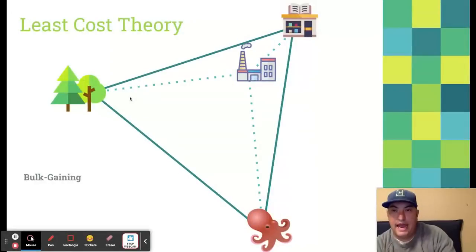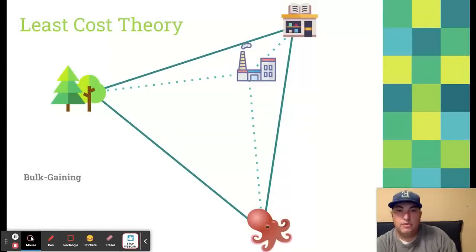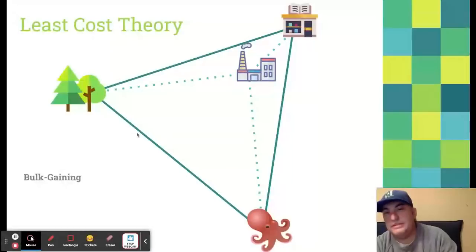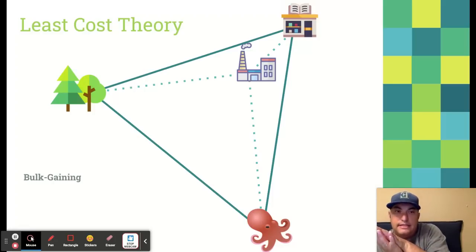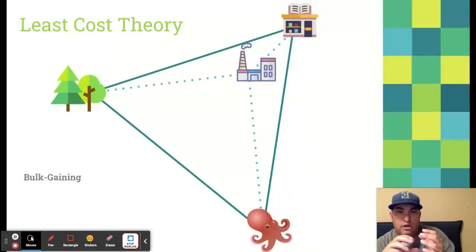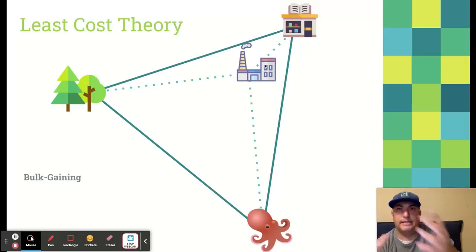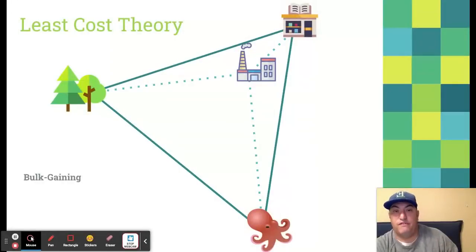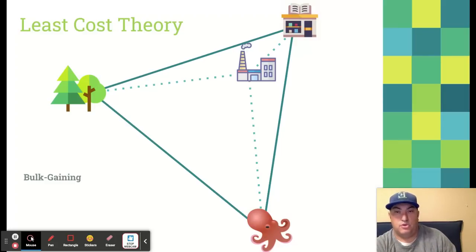The factory is where I take the wood, turn it into paper, add the octopus ink to the pages, and I have my book. Now, this situation is going to be called bulk gaining. In this situation, the resources are coming to me as paper already, and we're adding ink to the paper — so this thing is getting bulkier. The materials being put together to create my final product are both lighter than the actual final material itself, so this is called bulk gaining. Since the heaviest object is the book, I don't want to pay to transport it very far, so I'm going to put my factory close to the market — close to where I'm going to sell this product, in this case, the bookstore.